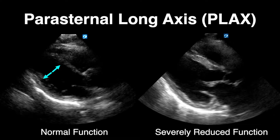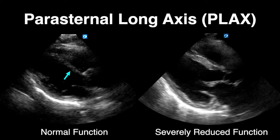In the parasternal long axis I mostly focus on the left ventricle. We identify the myocardial wall and pay attention to how much it comes together during systole. Another trick is to look at the anterior mitral valve leaflet and how well it approximates the septal wall. If it's hitting up against the septal wall during initial filling, the ejection fraction is likely in the normal range. This can be difficult to interpret in patients with arrhythmia, tachycardia, mitral stenosis, or aortic valve regurgitation.